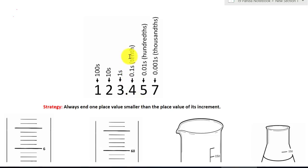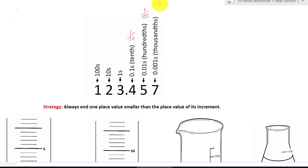Here we have tenths — that means one over ten. Here we have hundredths — one over a hundred. And last, thousandths — that means one over a thousand. The strategy is always to read one place value smaller than the place value of its increment.